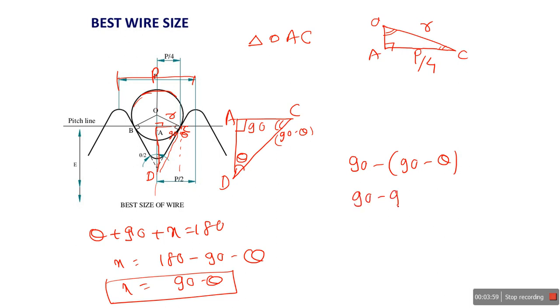This angle now is simply 90 minus (90 minus theta), so 90 minus 90 plus theta. So this angle is theta. So the angle is theta.